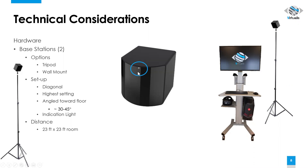When the base stations are connected, plugged in, and recognized through the SteamVR software — recognizing one another and the headset — that indication light turns green. If your system is not working and you notice that the base station light is red, that would indicate that something is wrong with the base station, and you should reach out to technical support.